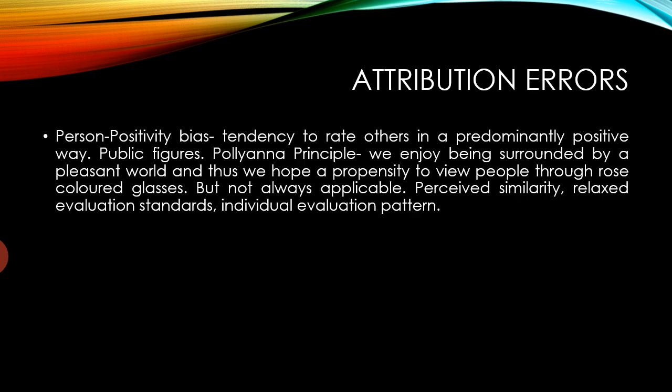The second attribution error is Person Positivity Bias — a tendency to rate others in a predominantly positive way. For example, we tend to view public figures as having more positive traits. This is based on the principle that we enjoy being surrounded by a pleasant world, which is also a matter of security. Perceived similarity, relaxed evaluation standards, and individual evaluation patterns also account for this bias.